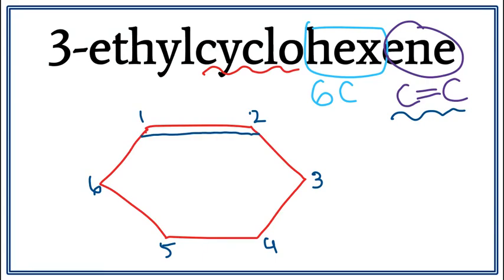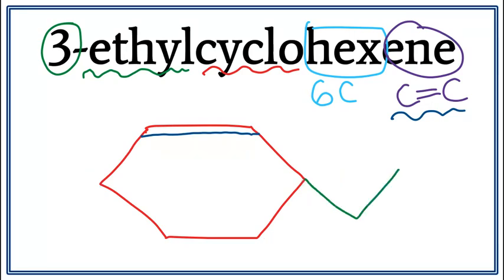We also have an ethyl attached to this cyclohexene, and it is attached on the third carbon. Let's get rid of these numbers and attach ethyl on the third carbon. This is the structure for 3-ethyl-cyclohexene, or 3-ethyl-cyclohex-1-ene.